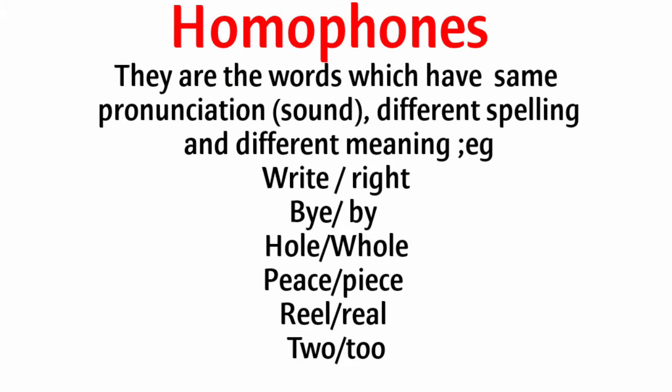Number one: homophones. They are the words which have the same pronunciation, different spelling, and different meaning. For example: right/write, buy/by, hole/whole, piece/peace, rail/rile, two/too.